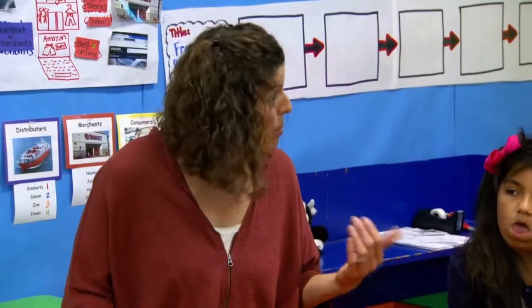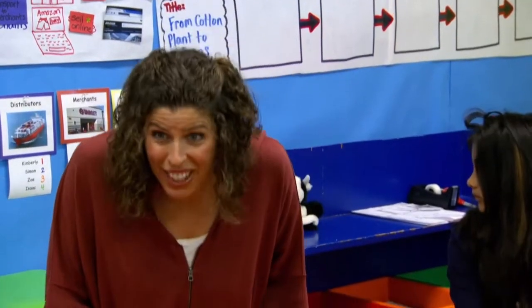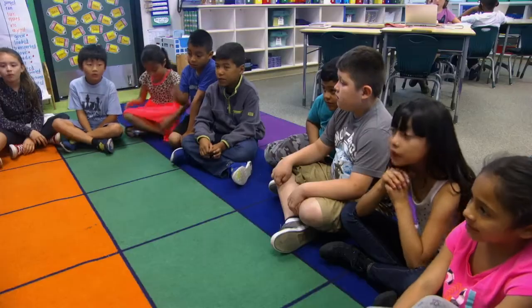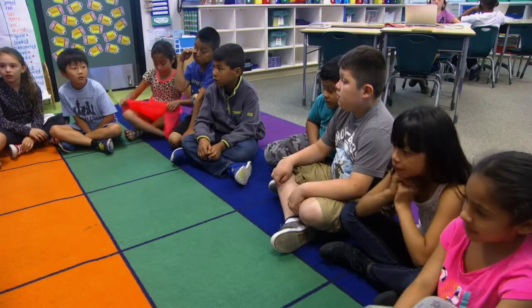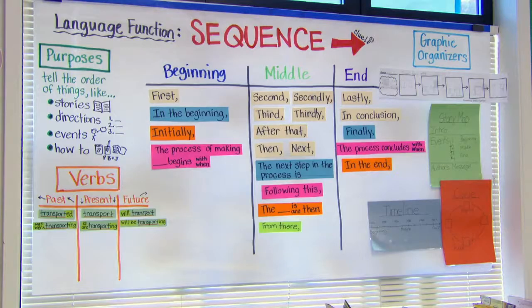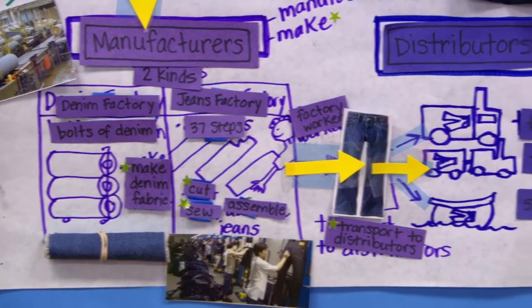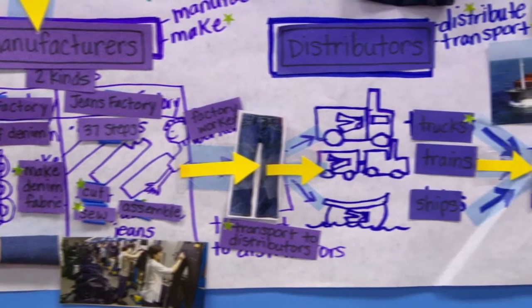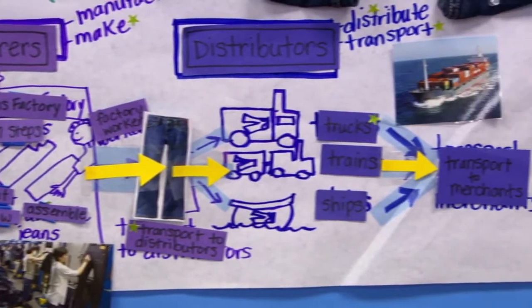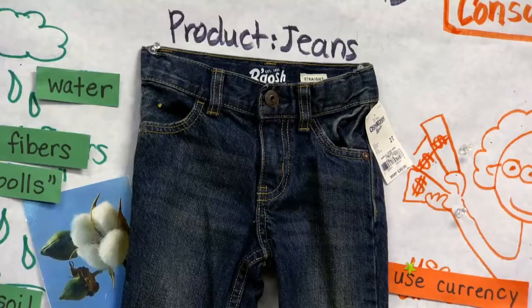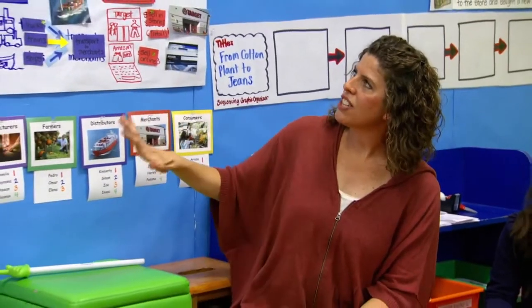So we're going to be practicing using sequencing language. This lesson is focused on the language function of sequence — to tell how something goes from the initial natural resource into the product. We're going to start out telling the story of cotton to jeans in the present, and then we'll move it into the past.